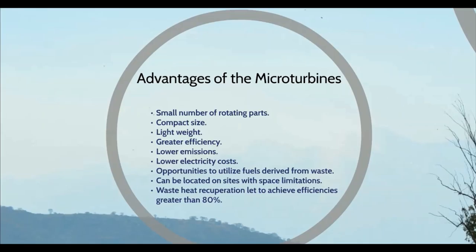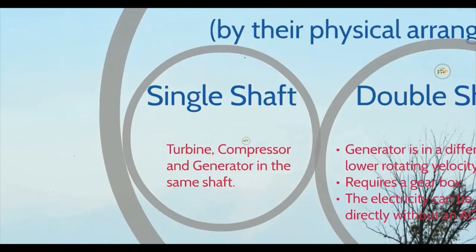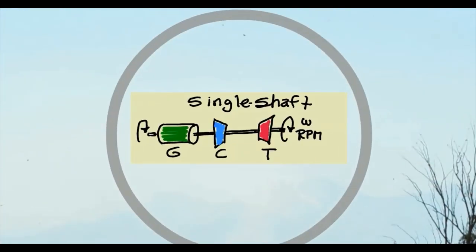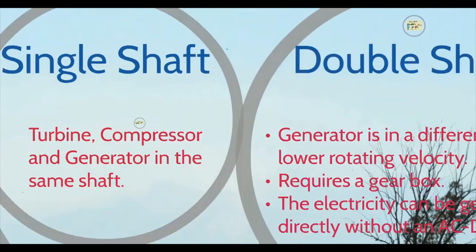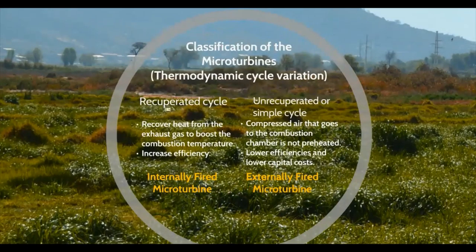Microturbines can be classified by the physical arrangement of their component parts. The first type is single shaft, where the turbine, compressor, and generator are on the same shaft. The second type is double or two shafts, where the generator is on another shaft, which doesn't require an inverter to change the frequency of the AC power generated, because of the low rotational velocity.